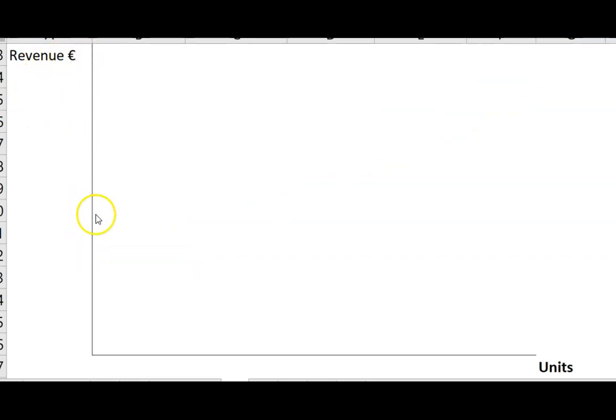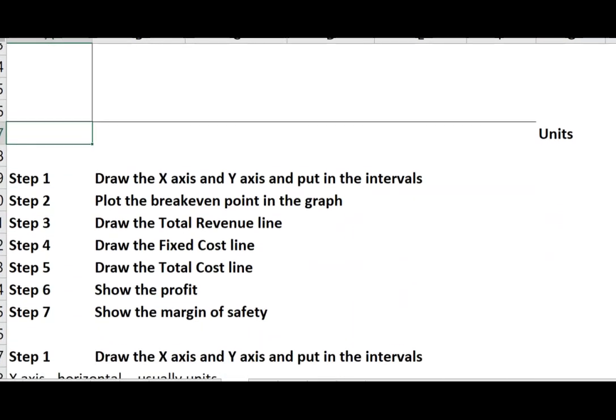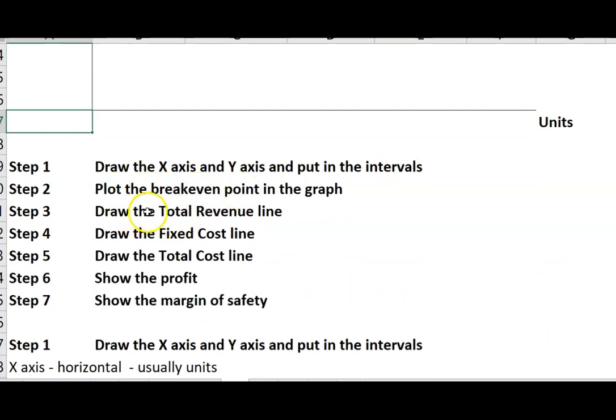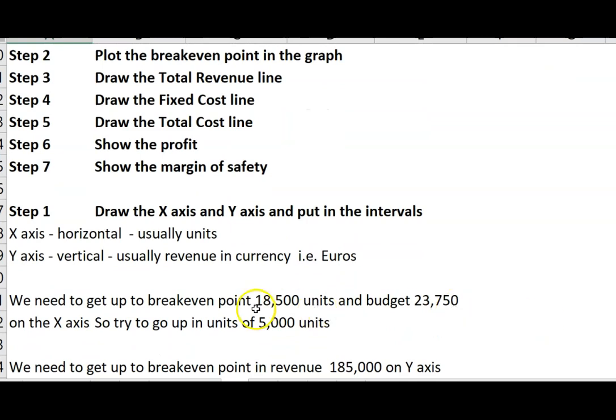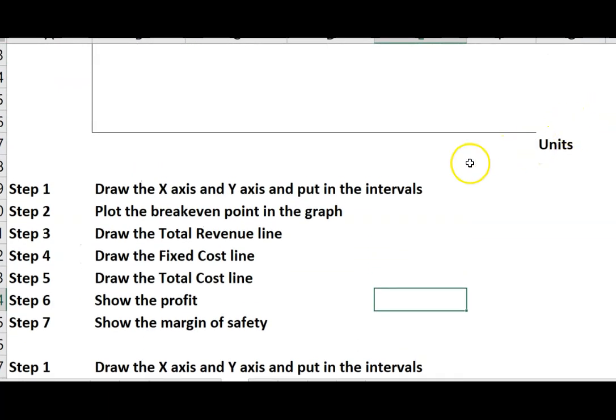Start with the X and Y axis. Label the Y axis revenue, the X axis units. Then put in intervals and plot the breakeven point. Draw the X axis and Y axis and label them. The X axis is the horizontal one, usually units. The Y axis is the vertical one, usually revenue in currency. We've already calculated the breakeven point is 18,500 units. Our budgeted activity is 23,000. So we need to go up to about 25,000 units on the X axis, in units of 5,000.